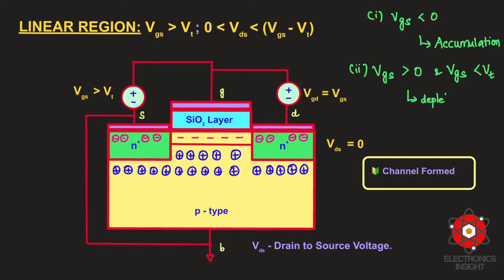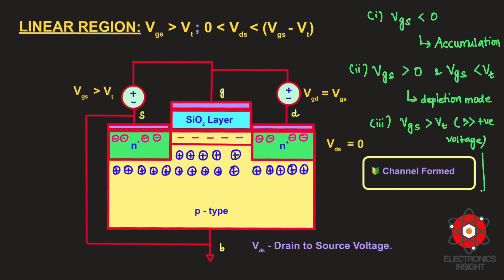Please do watch the previous video for a detailed discussion. When we slightly increase the VGS value so that VGS is greater than VT, a greater amount of positive voltage is applied. More and more repulsion is experienced by the majority charge carriers (holes), while the minority charge carriers, which are electrons, get attracted and stay beneath the surface of the SiO2 layer. This region becomes the inversion layer, and this mode we call inversion.